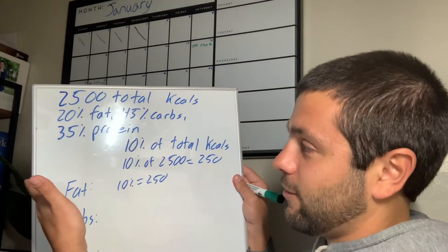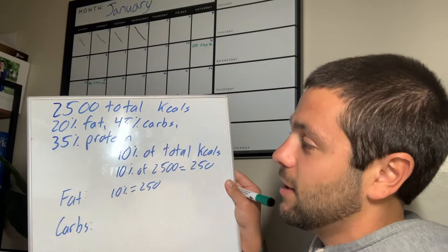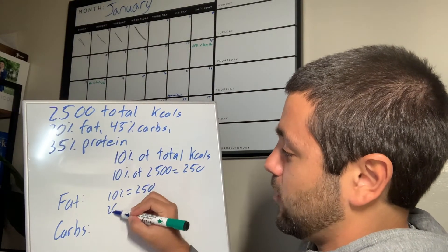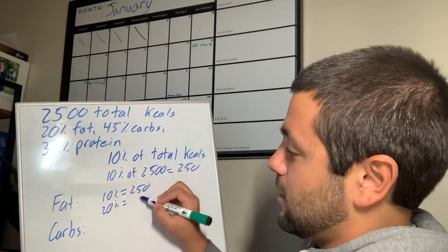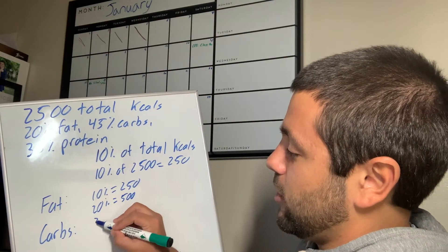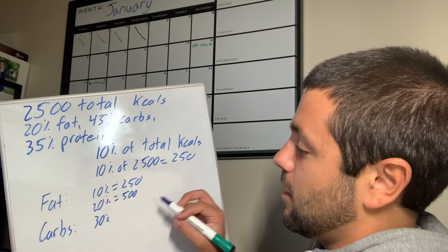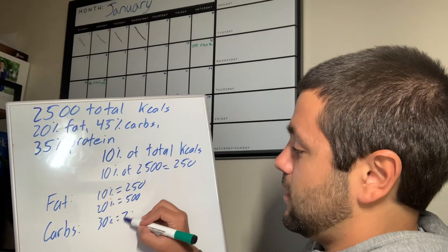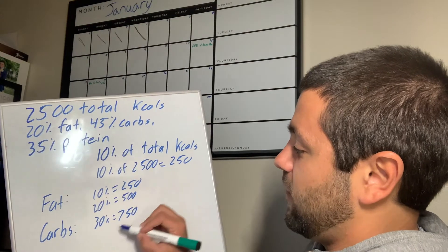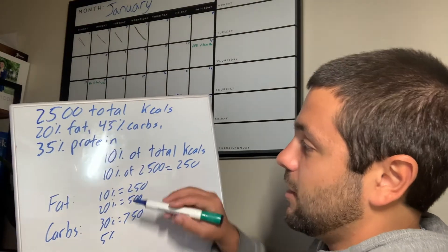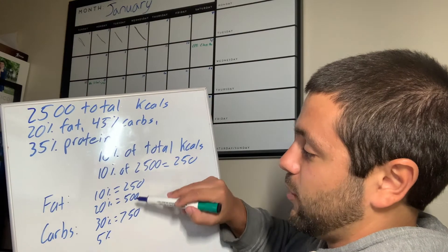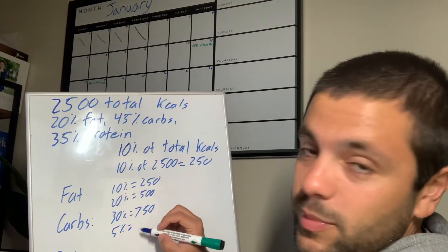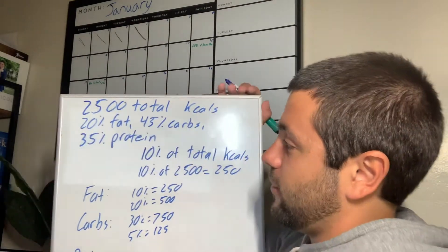We obviously don't have 10% in this situation. So if I want to get to 20%, all I need to do is double my 10%, which gives me 500. If I want 30%, I just add 20 plus 10, that's going to give me 750. And if I need 5%, I just take half of 10%, which in this situation would be 125.